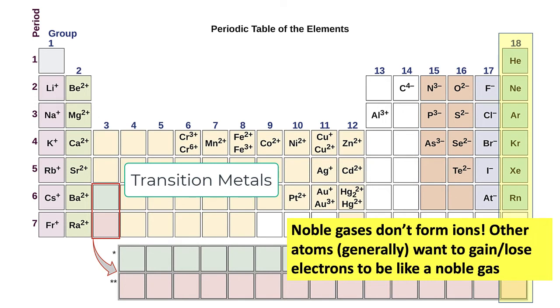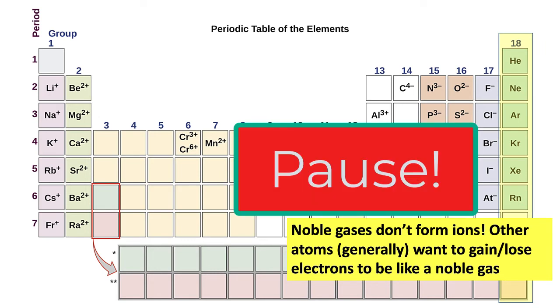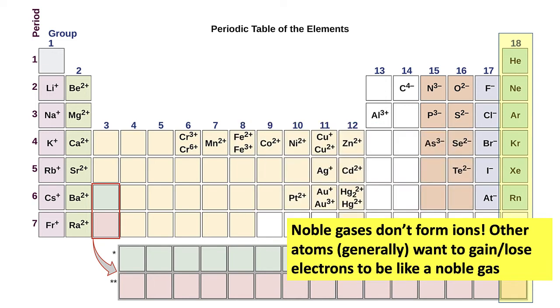To form a negative ion means we've gained an electron, and to form a positive ion means we lose an electron. Noble gases don't form ions, but the other ones will generally want to gain or lose electrons to be like a noble gas. For example, oxygen has two fewer electrons than neon, but it can gain two electrons to become like neon. Hence oxide, the oxygen anion, has a charge of minus two. Fluorine has one fewer electron than neon, and so if it gains an electron, it'll be just like neon.